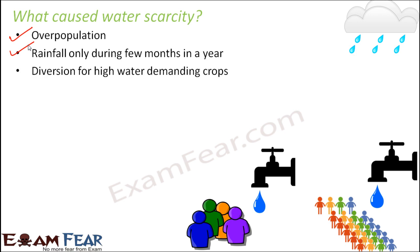Another cause is the growing of high water-demanding crops. Certain crops like rice and paddy fields need a lot of water. If we do not have sufficient water resources, we should grow fewer high water-demanding crops and more low water-demanding crops. Spending large amounts of water on such crops adds to water scarcity.